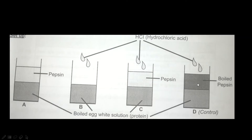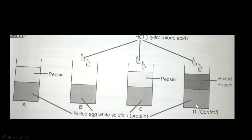So to summarize: test tube A has the enzyme pepsin plus protein; test tube B has no enzyme but hydrochloric acid plus protein; test tube C has both the enzyme and hydrochloric acid plus protein; and test tube D has hydrochloric acid, but the pepsin is boiled. Because this pepsin is boiled, we can conclude that the pepsin in test tube D is denatured.